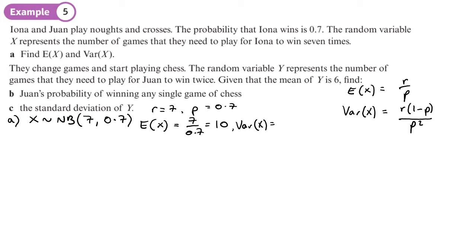And Var(X) is going to be 7 times 1 minus 0.7, that's 0.3, so 7 times 0.3 divided by 0.7 squared. I think I will need a calculator for that. So 7 times 0.3 divided by 0.7 squared, which I think is 0.49, and I get 30 over 7.